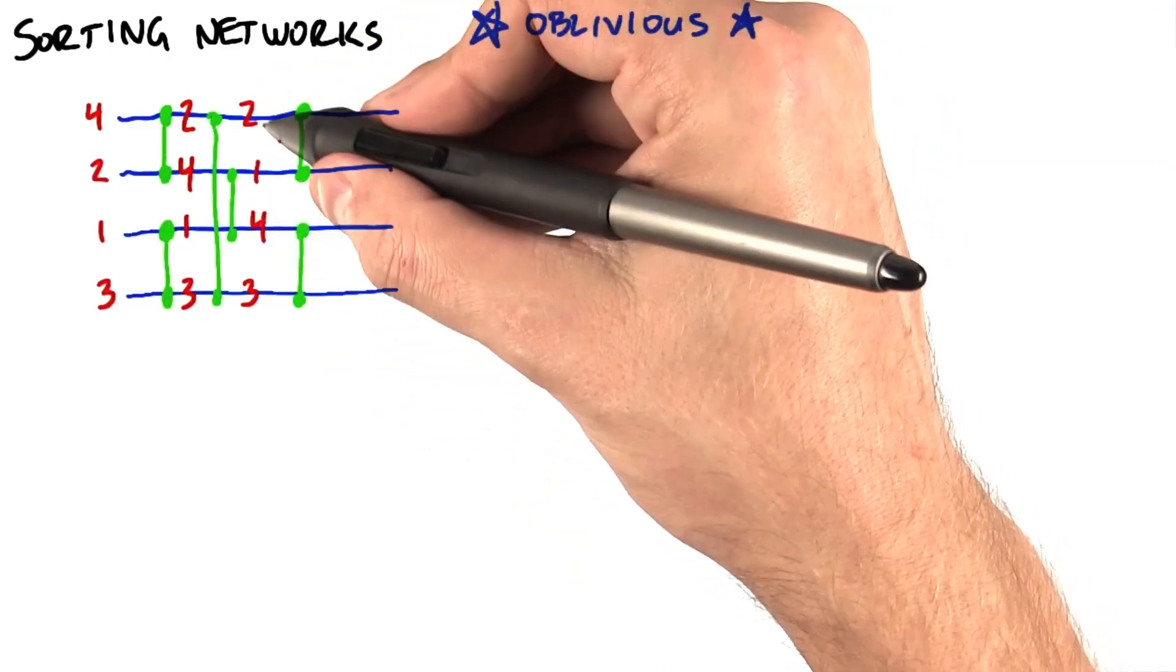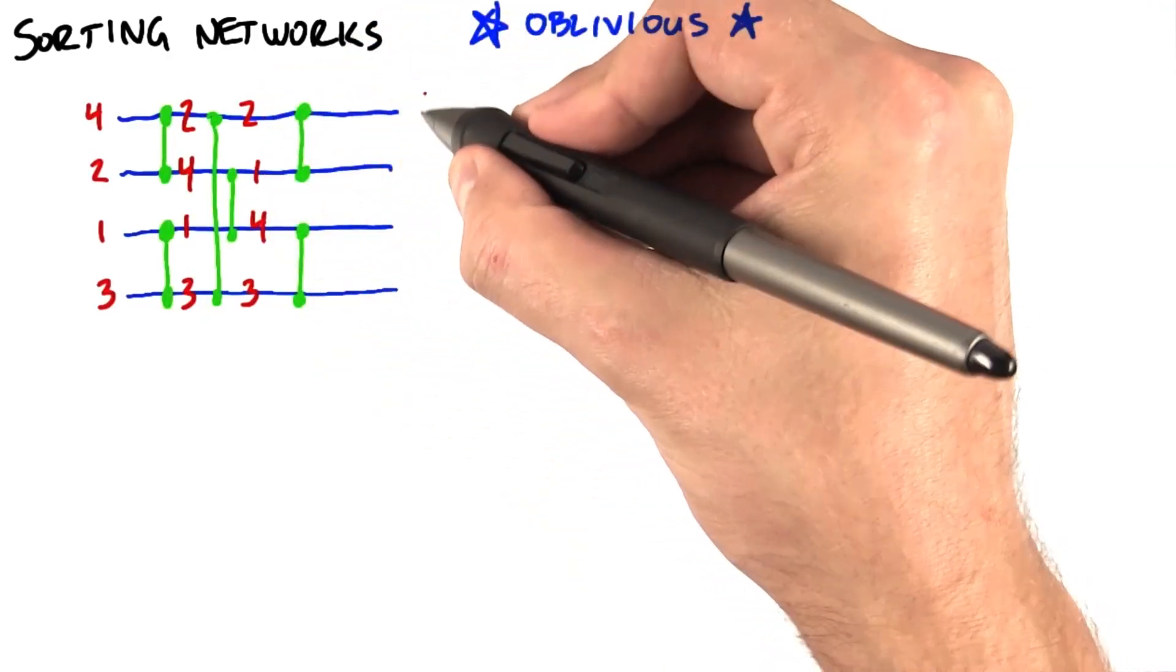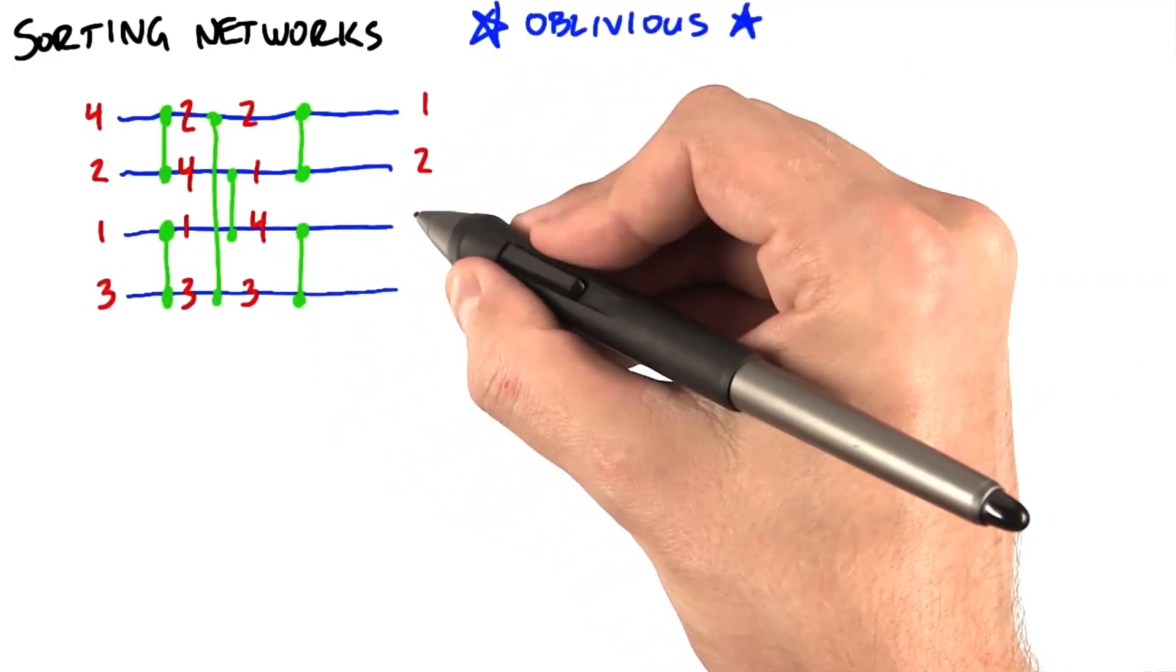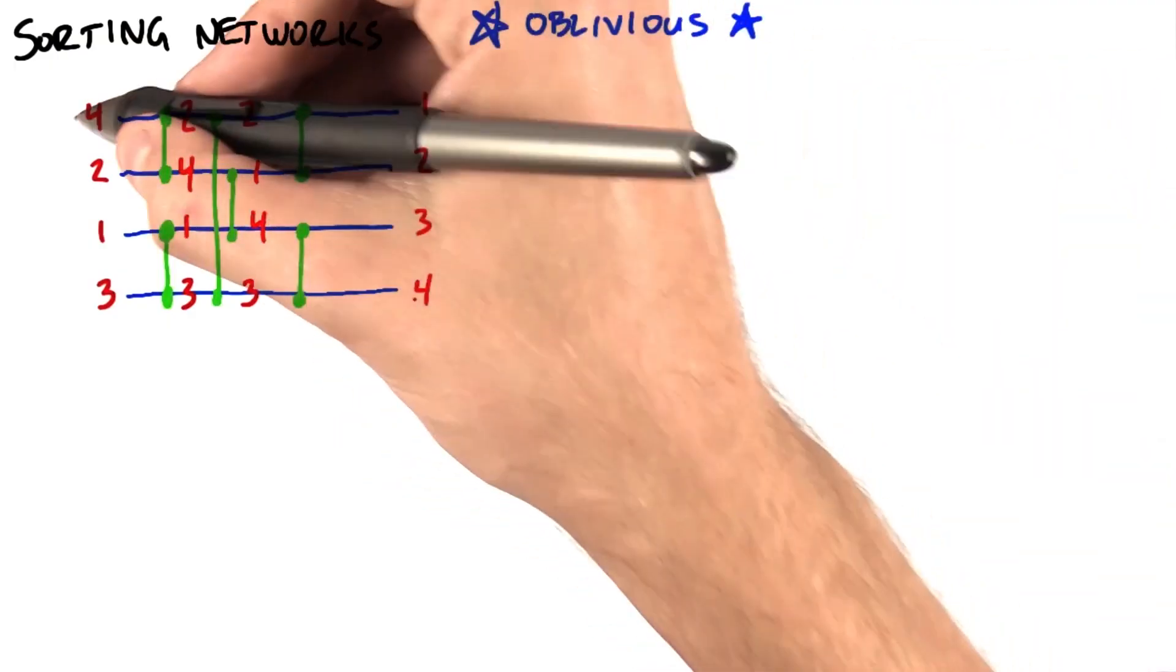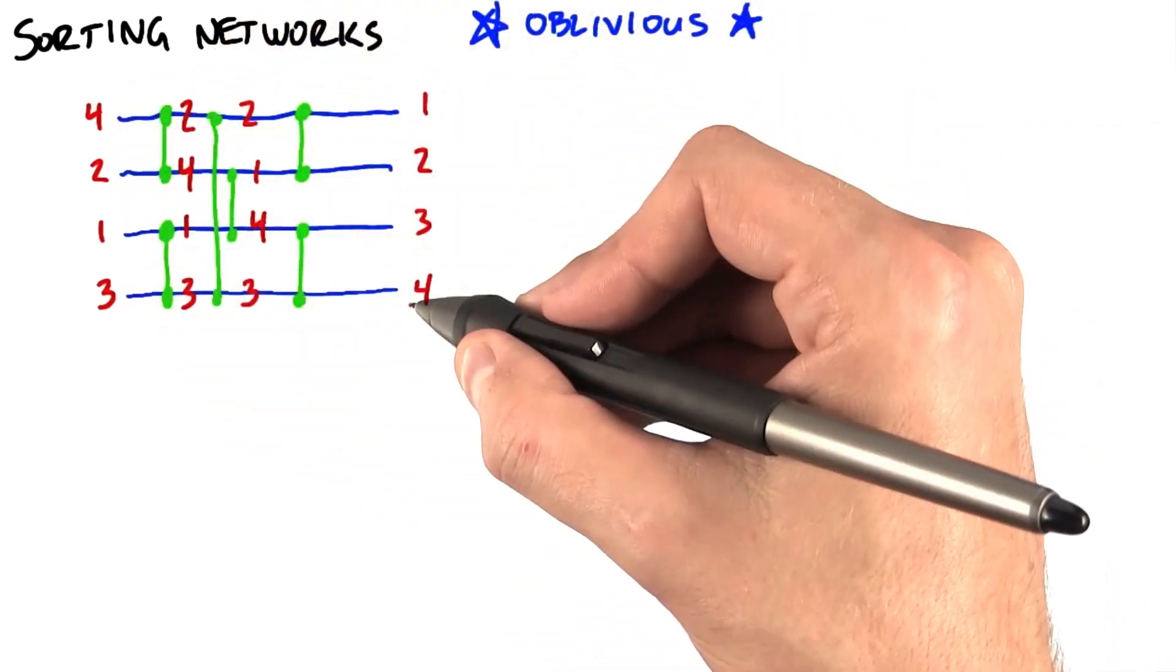And finally we have two more swaps to do. One and two are in the wrong order, so we'll swap them. Four and three are also in the wrong order, so we will swap them. And voila, now we've moved from an unsorted sequence to a sorted sequence.